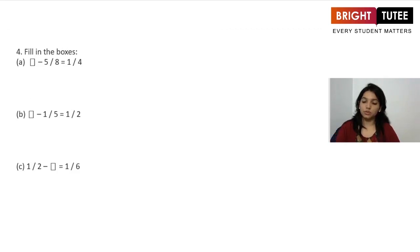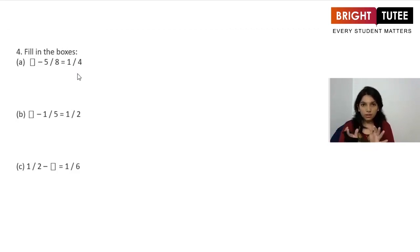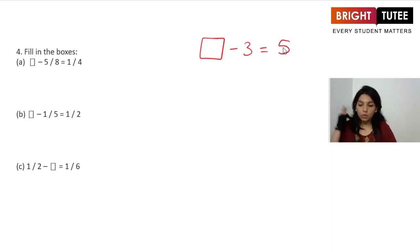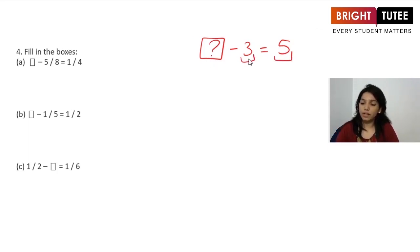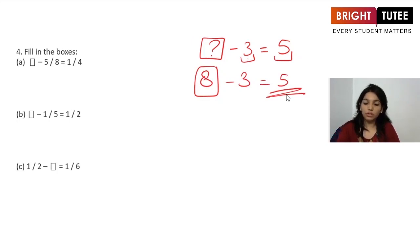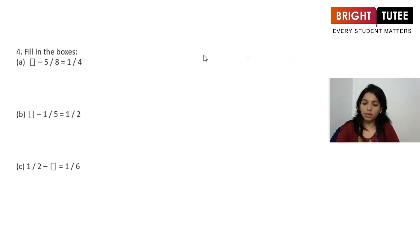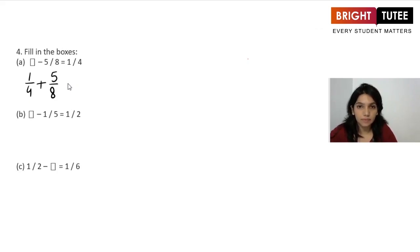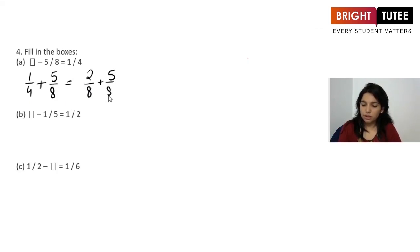We are given fractions and need to find the missing whole fraction. Something take away 5/8 equals 1/4. Think: if something take away 3 is 5, you find the unknown by adding 5 and 3 to get 8. Similarly here, we add the fractions on the right-hand side: 1/4 plus 5/8. Converting to like fractions: 2/8 plus 5/8. So 5 plus 2 is 7/8.